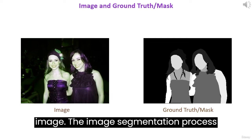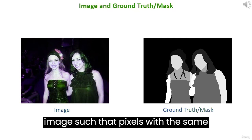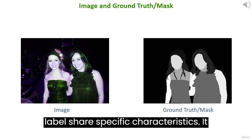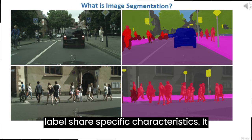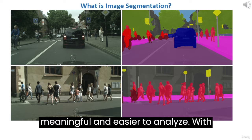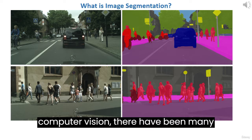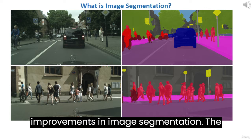The image segmentation process assigns a label to every pixel in an image such that pixels with the same label share specific characteristics. It makes the image representation more meaningful and easier to analyze. With the advent of deep learning algorithms in computer vision, there have been many improvements in image segmentation.